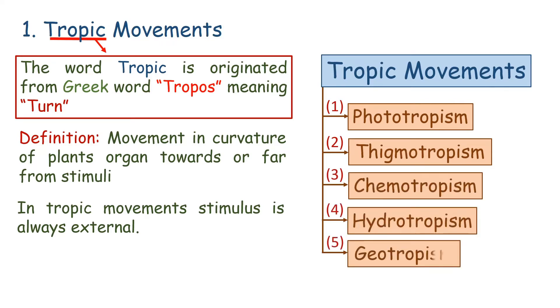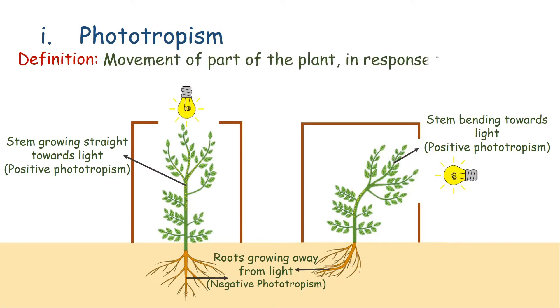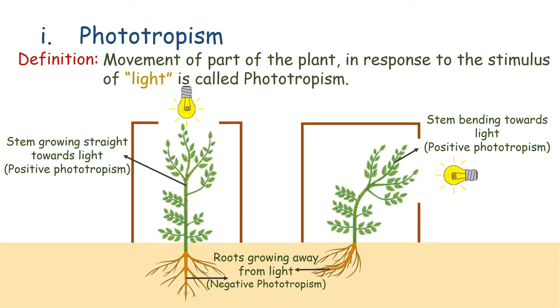The movement of part of the plant in response to the stimulus of light is phototropism. Stems of plants that move towards light show positive phototropism. Roots that grow away from light show negative phototropism.